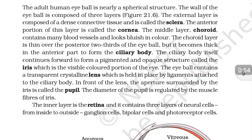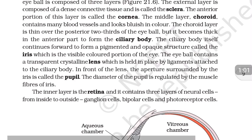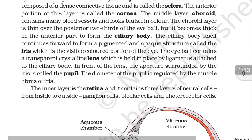The middle layer is the choroid, which contains many blood vessels and is bluish in color. The choroid layer is thin over the posterior two-thirds of the eyeball, but it becomes thick in the anterior part to form the ciliary body.